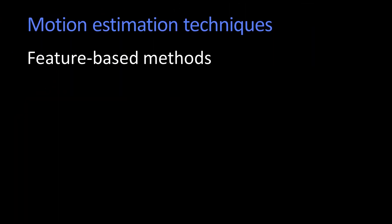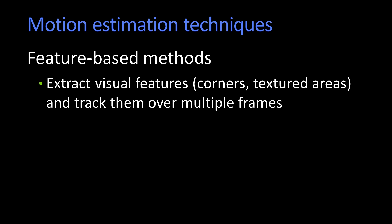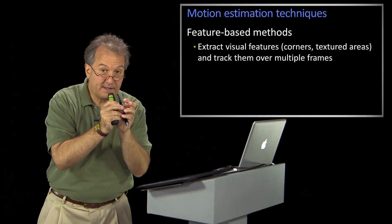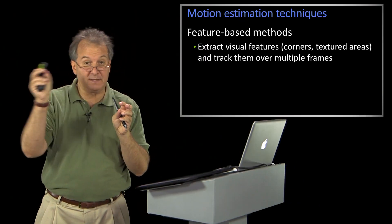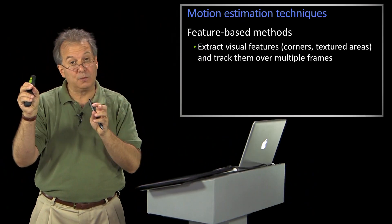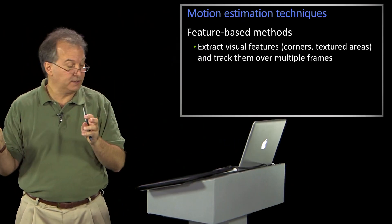The first approach involves feature-based methods. Feature-based methods are just what you might think — extract some visual features like corners, textured areas — we know all about that — and track them across multiple frames, finding them from one frame into another. We know all about that too.